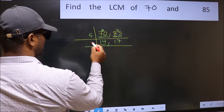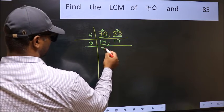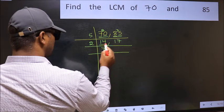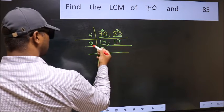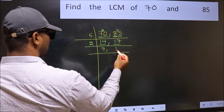Now here we have 14. 2 sevens is 14. The other number, 17, is not divisible by 2, so you write it down as it is.